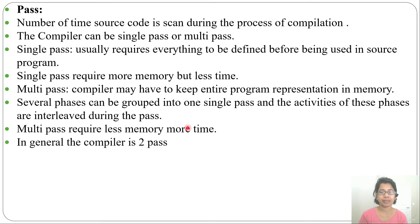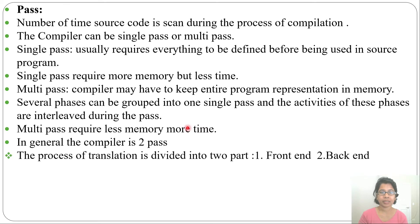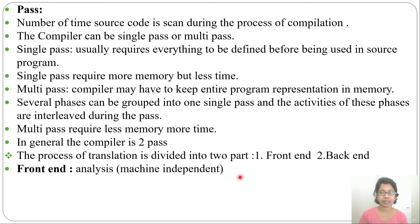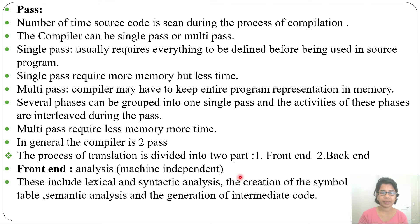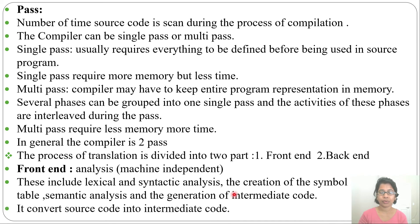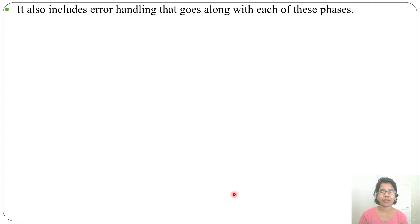In general, the compiler is two pass. The process of translation is divided into two parts: front end and back end. The front end is also called analysis or machine independent. It includes lexical analysis, syntax analysis, creation of the symbol table, semantic analysis, and generation of intermediate code. The front end converts source code into intermediate code and includes error handling for each of these phases.